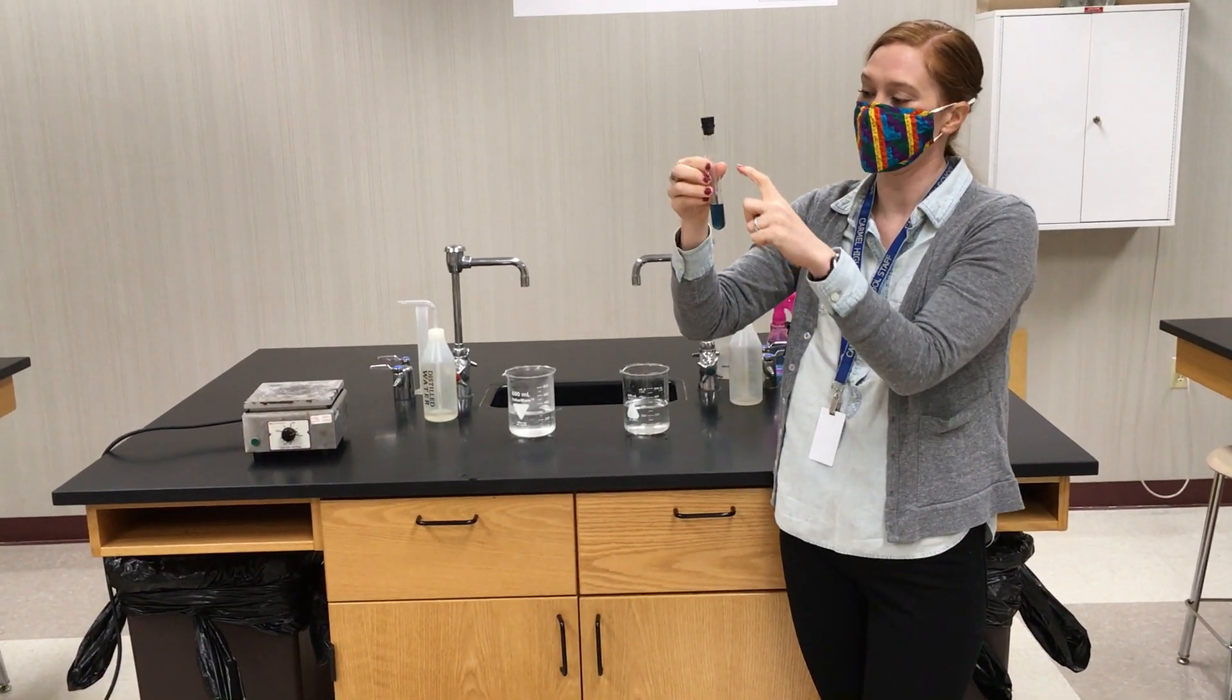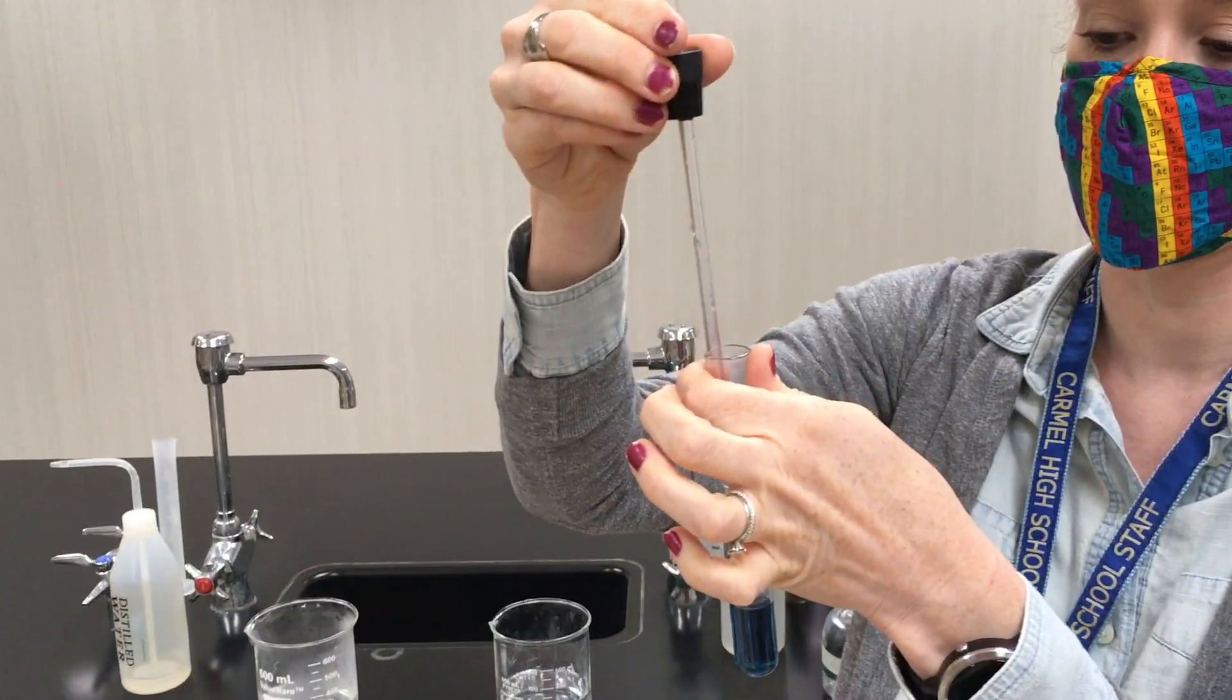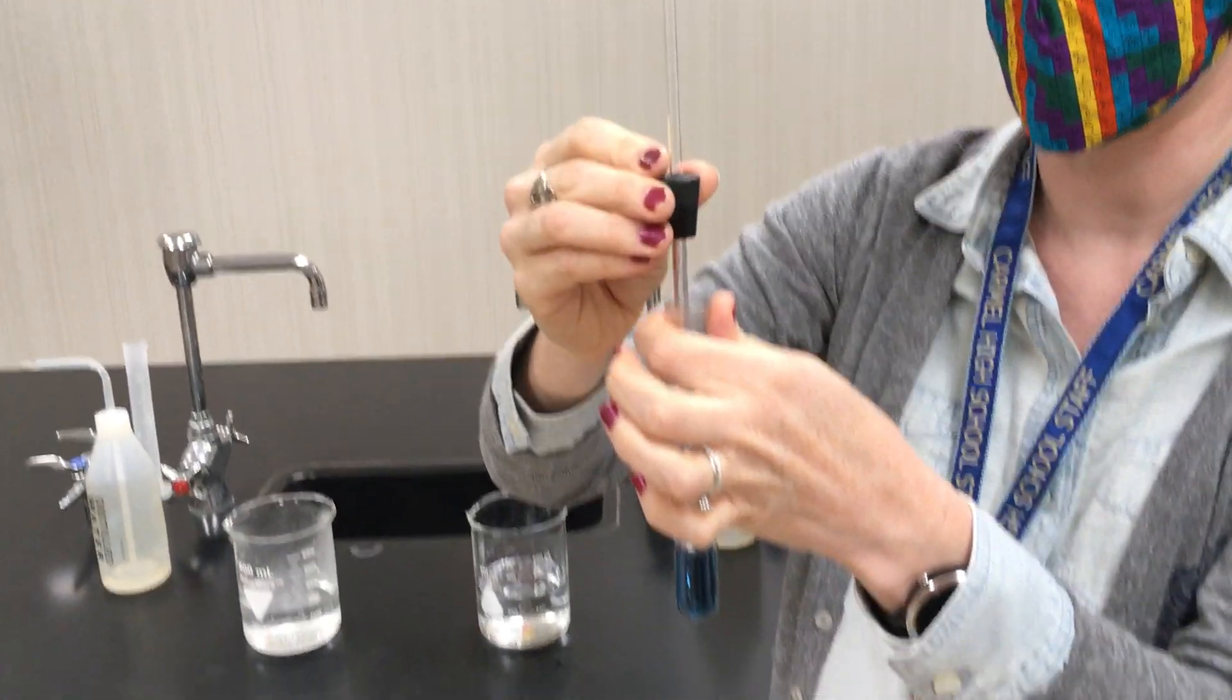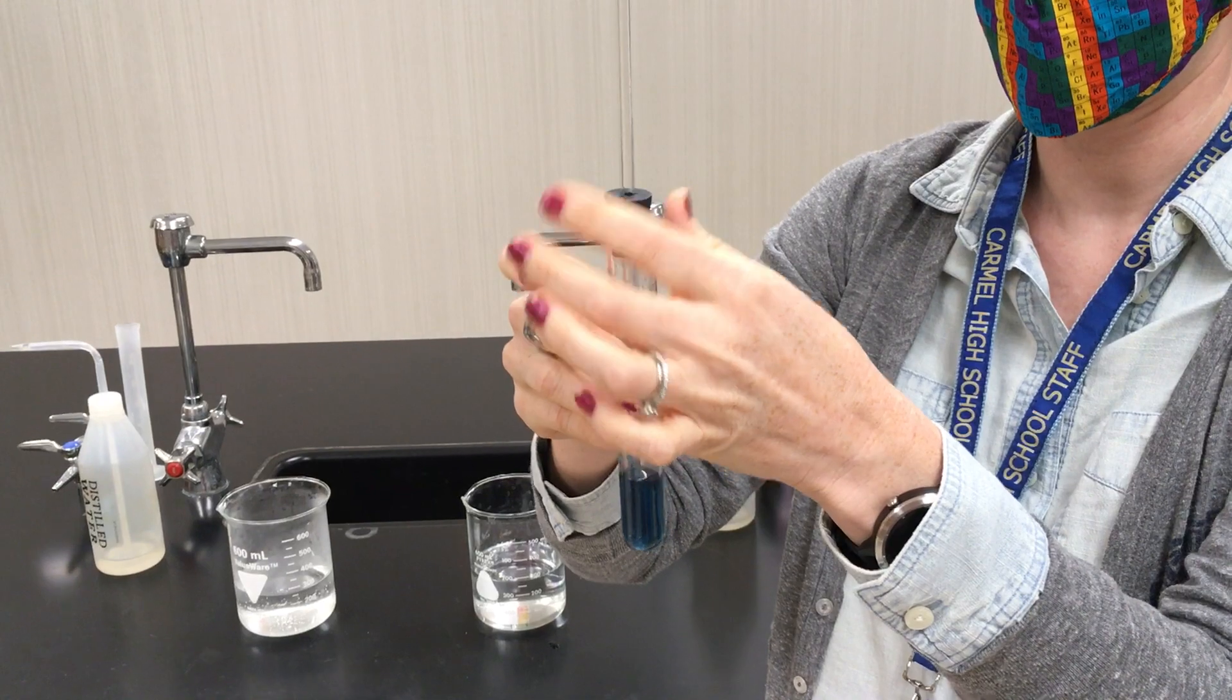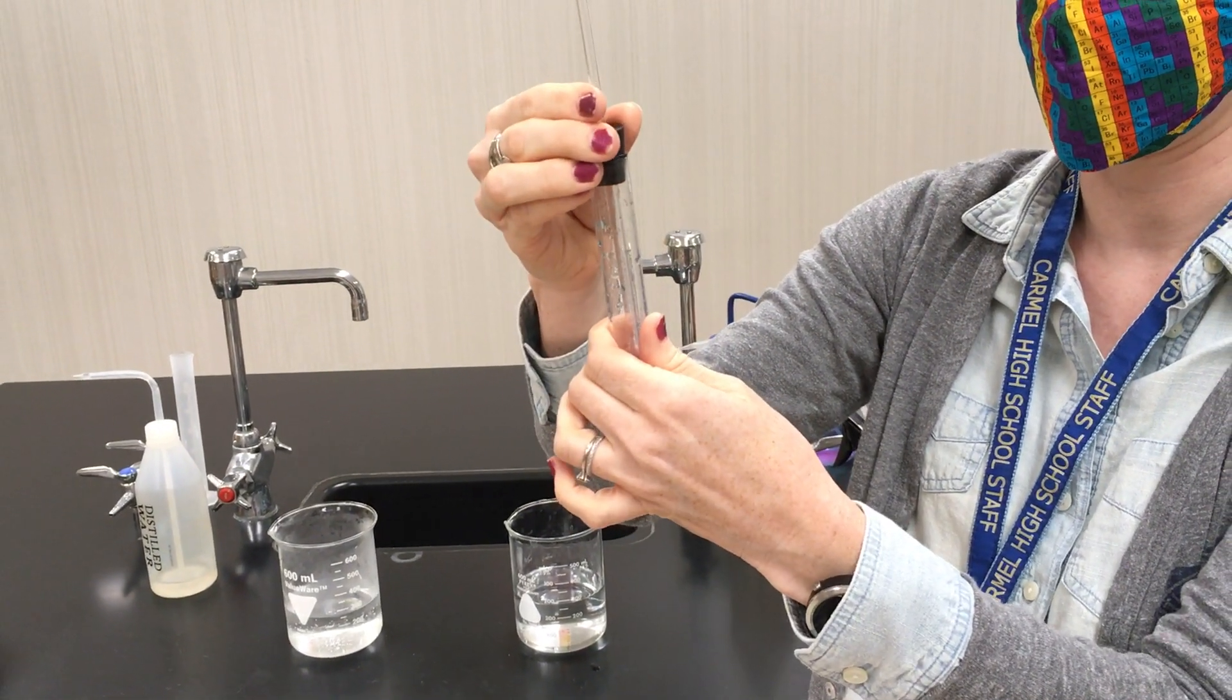This has a large glass test tube with a glass tube that is in a rubber stopper that fits right in the top of the test tube. Inside the test tube is just some water with some blue food coloring so it's easier to see.